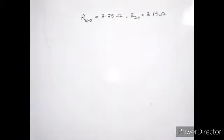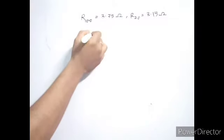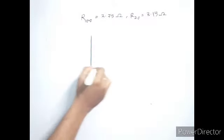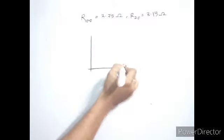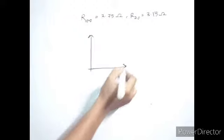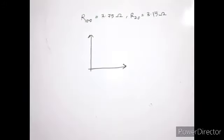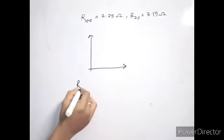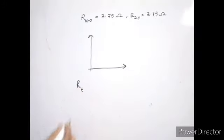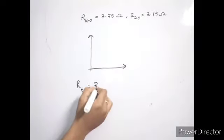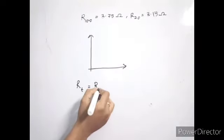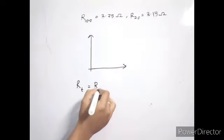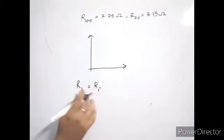So the previous method — the first one we used — is correct. Let me explain why we get different values when using 20 degrees Celsius and 100 degrees Celsius as initial and final values.